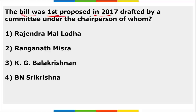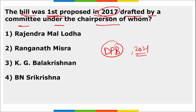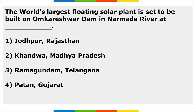The Data Protection Bill 2021 was withdrawn from the Lok Sabha by Union Minister Ashwani Vaishnaw after four years of deliberation. The bill was first proposed in 2017 and drafted by a committee under the chairmanship of BN Sri Krishna. The Government of India aims to replace the personal data protection bill with a comprehensive legal framework to tackle current and future challenges of the digital ecosystem.